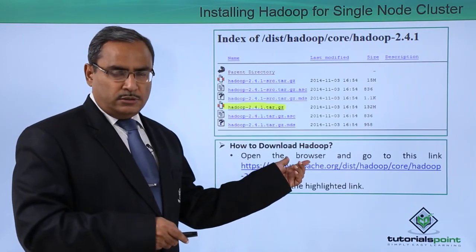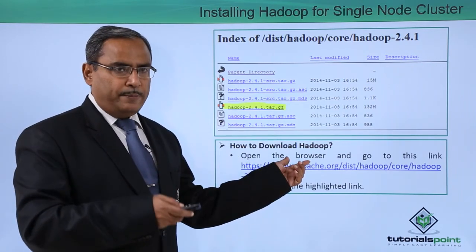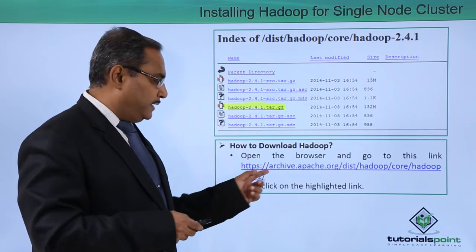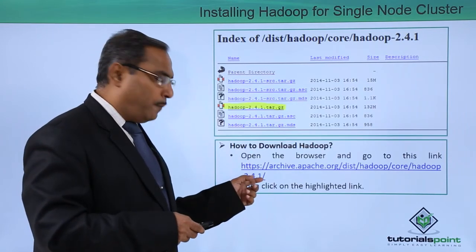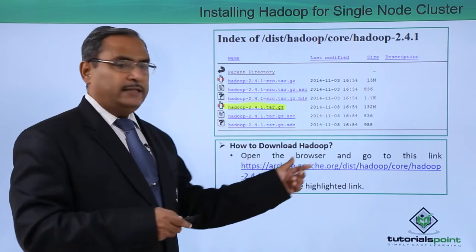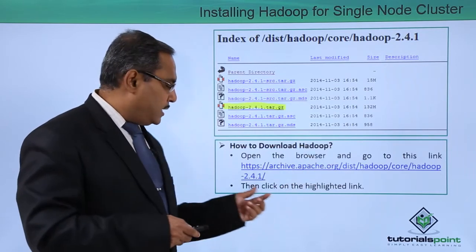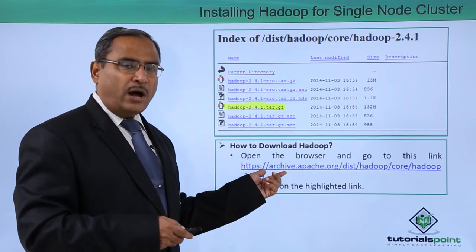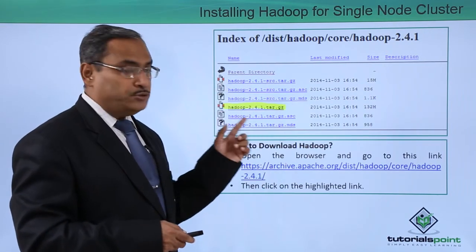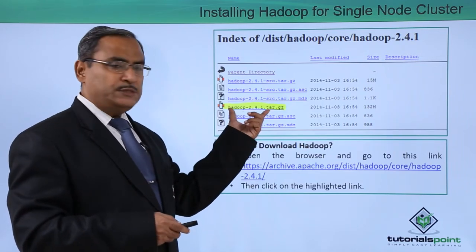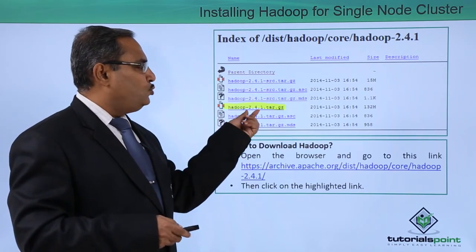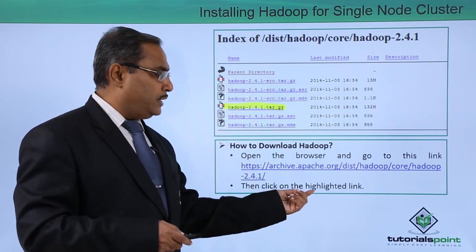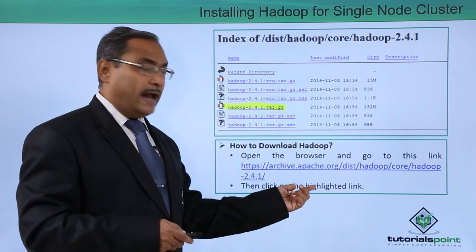Now open the browser in Linux. Go to the particular link provided here — copy this link and type it in the browser URL bar, then click on the highlighted link. This web page will open and it contains the file hadoop-2.4.1.tar.gz. This is the file which has to be highlighted and clicked to download.